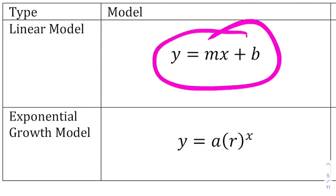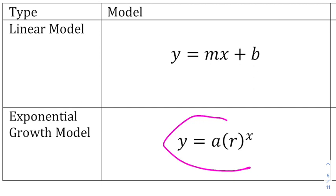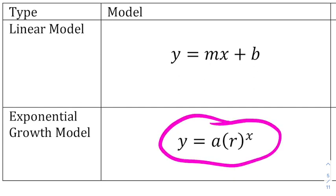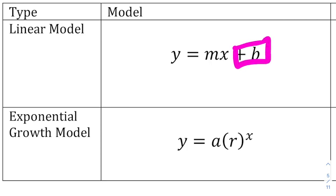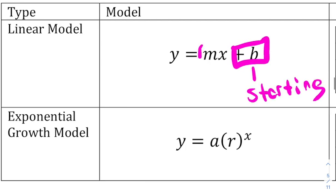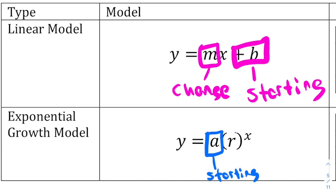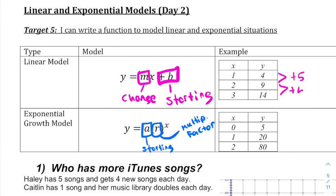The linear model is really just slope intercept form, y = mx + b, where the exponential model is y = a times r to the x. In slope intercept form, b is our starting point and m is our slope or how we change. With exponential it's very similar. a is going to be our starting point and r is our multiplication factor. Linear has a consistent amount you add by, and exponential has a consistent amount that you multiply by.